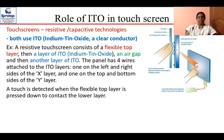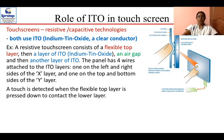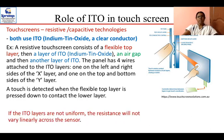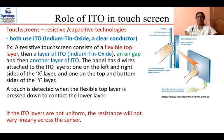Touchscreens can be based on resistive or capacitive technologies. In the resistive type, a flexible top layer is followed by a thin ITO layer, then an air gap, and then another ITO layer below. A touch is detected when the flexible top layer is pressed down to contact the lower layer. If the ITO layers are not uniform, the resistance will not vary linearly, causing problems with the touchscreen display — so the quality of ITO matters a great deal.